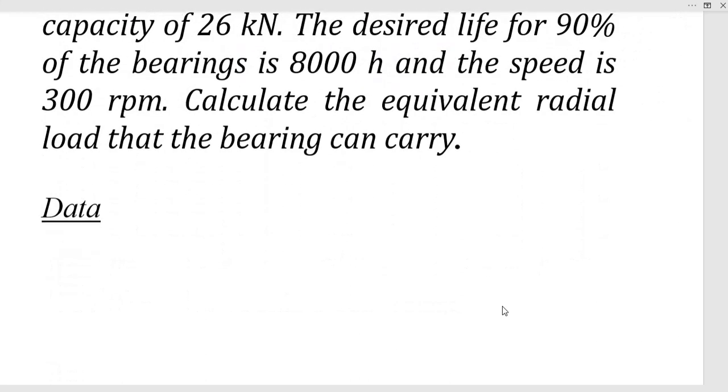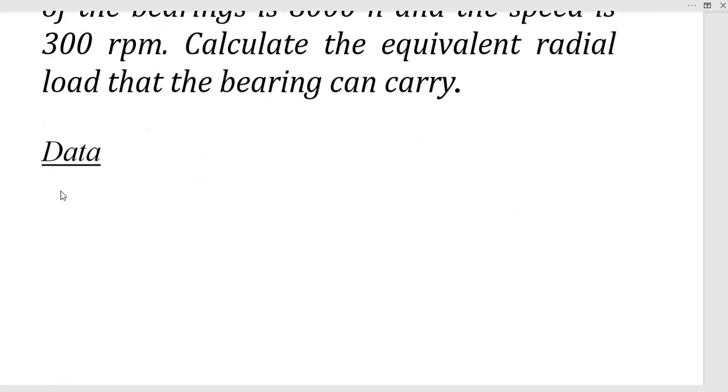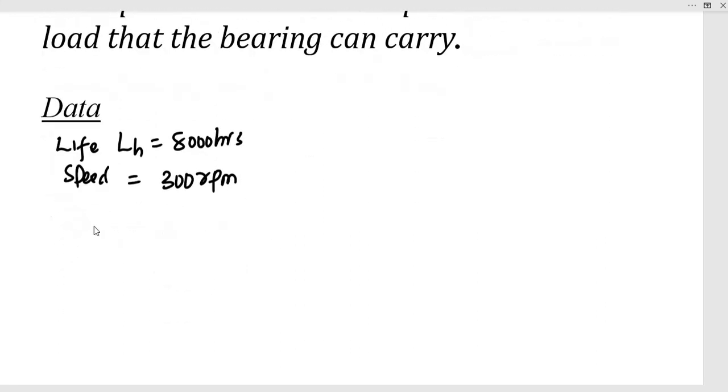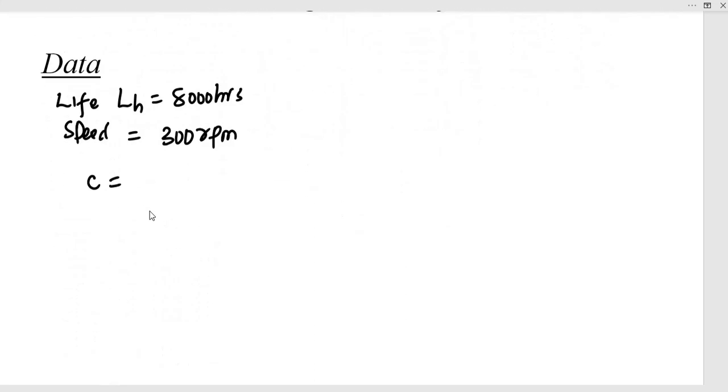So in this question, this is the data that we are given. We are provided with the life, L_h in hours, and this is 8,000 hours. Then we are provided with the speed at which the bearing is going to be moving, and it is 300 revolutions per minute. Then we are also told that the dynamic load capacity C is going to be 26 kN, which will be 26,000 N.